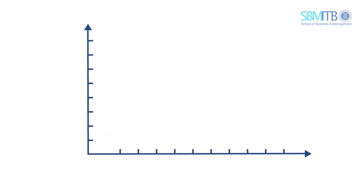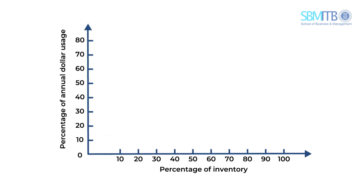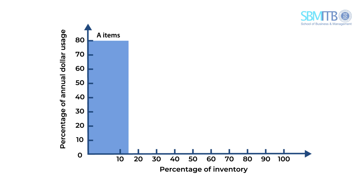Products classified in class A are products that have a high annual dollar volume. Those products represent around 70% of the total dollar usage, but only represent 15% of the total inventory items.